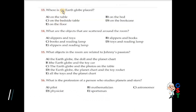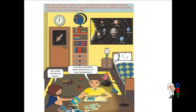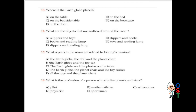Question number 13: Where is the earth globe placed? Options are on the table, on the bed, on the bedside table, on the bookcase, and on the floor. Looking at the picture, it is on the bookcase. D is correct. Question number 14: What are the objects that are scattered around the room? Only slippers and toys is the correct answer. Books, reading lamp, and other combinations are incorrect. Option A is correct.